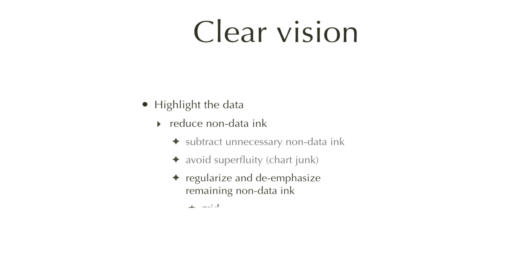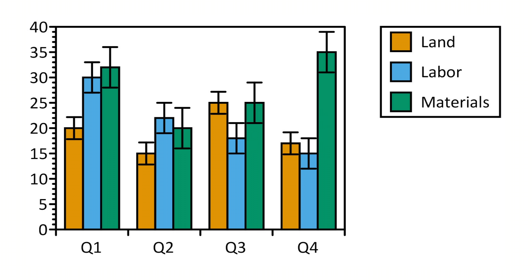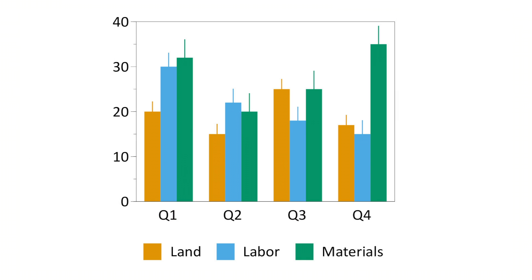Here's an example of a simple column graph. On the first try out of one of my graphic packages, you can see that the graph is very busy, with error bars and a thick frame around the data, thick tick marks, and a huge legend.